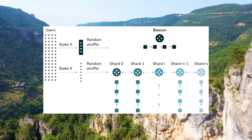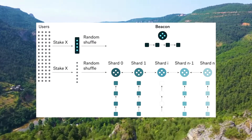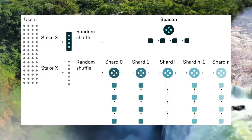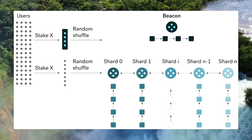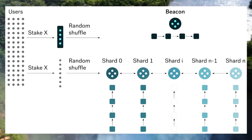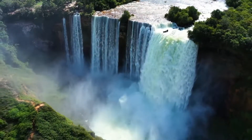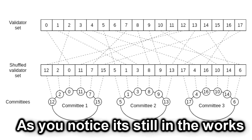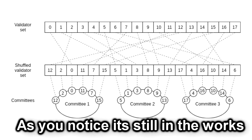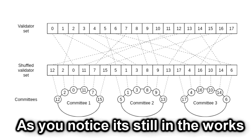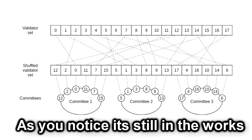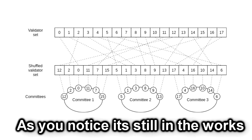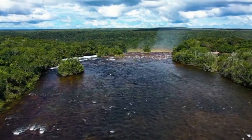Firstly, an attacker can try to sabotage a shard and use it to broadcast invalid transactions onto the network. Since shards transmit information between each other, it's easy for other shards to assume that these are authentic actions. One solution is to introduce random sampling — having shards randomly interact with each other within a time period of less than a minute — so the attacker does not have enough time or resources to determine which shard will interact with the next.